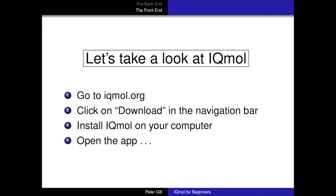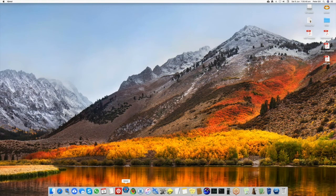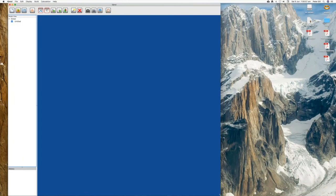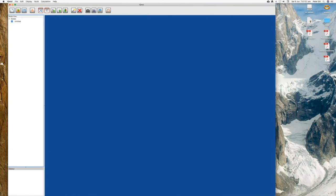This webinar is going to focus on that front-end, IQMol. To be able to do what I'm going to do, you really only need to do four steps: go to IQMol.org, click on the download link in the navigation bar on the left, which will download IQMol onto your computer in either the Windows, Mac, or Linux version. Then install it - for most people that installation process is completely trivial, just a double click and you're away. Then open up the app, and when you open it you have a big blue screen and some buttons. I'm going to close down this presentation and open up IQMol by clicking it in my dock. You can see this large window emerges.